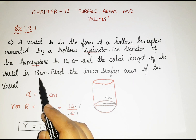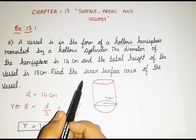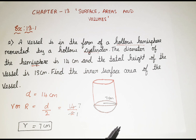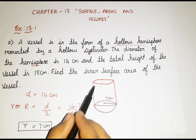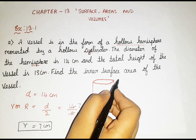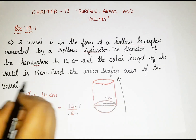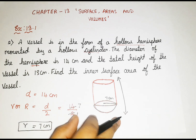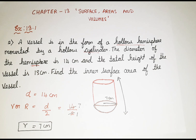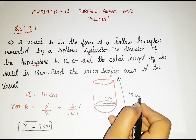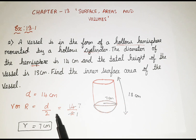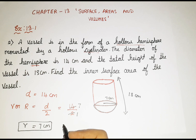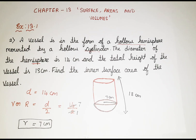The total height of the vessel is 13 centimetre. Vessel means the complete figure — the hollow hemisphere upon the cylinder. Total height means the complete height, including both shapes. So the complete figure height is 13 centimetre. We know the radius and the pi value, so it is really easy to apply the formula.